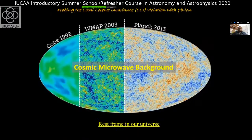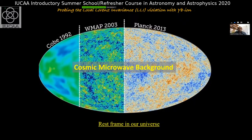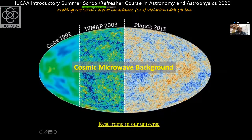The third example is looking into violations of fundamental symmetries — in this case, local Lorentz invariance, or LLI. The cosmic microwave background provides a fixed rest frame for our universe. Lorentz invariance says that any law of physics is independent of the orientation of the reference frame. If we consider the CMB as a fixed reference frame and perform an experiment where the laboratory reference frame changes with respect to the CMB, it should give different results if Lorentz symmetry is violated.